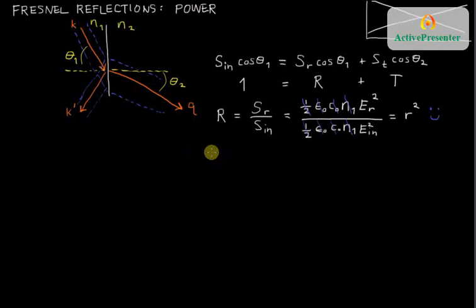As opposed to, if I want to calculate the transmission power percentage, now I've got this term ratioed to this term. The angles don't cancel, so I have S T cosine theta 2 over S incident cosine theta 1. And when I do the ratioing,